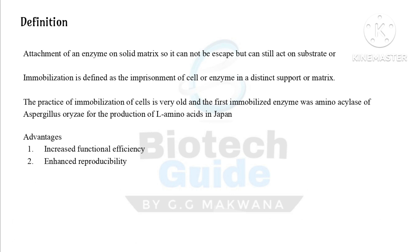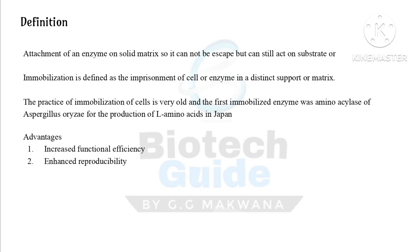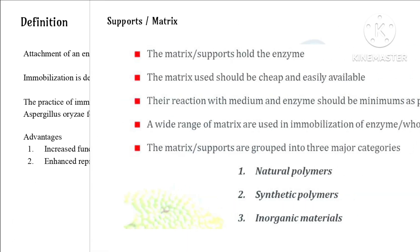In another word, we can say entrapment — meaning a protective layer of a support or matrix is provided to the cell or enzyme. The practice of immobilization of cells is very old. The first immobilized enzyme was aminoacylase of Aspergillus oryzae, used for the production of L-amino acids in Japan — an important historical point for competitive examinations. The main two advantages are that they increase functional efficiency and enhance reproducibility.